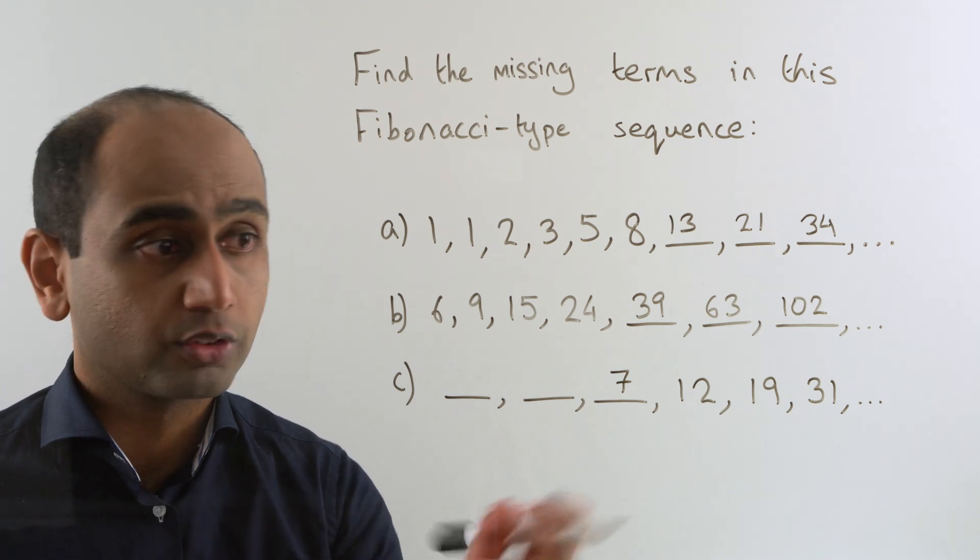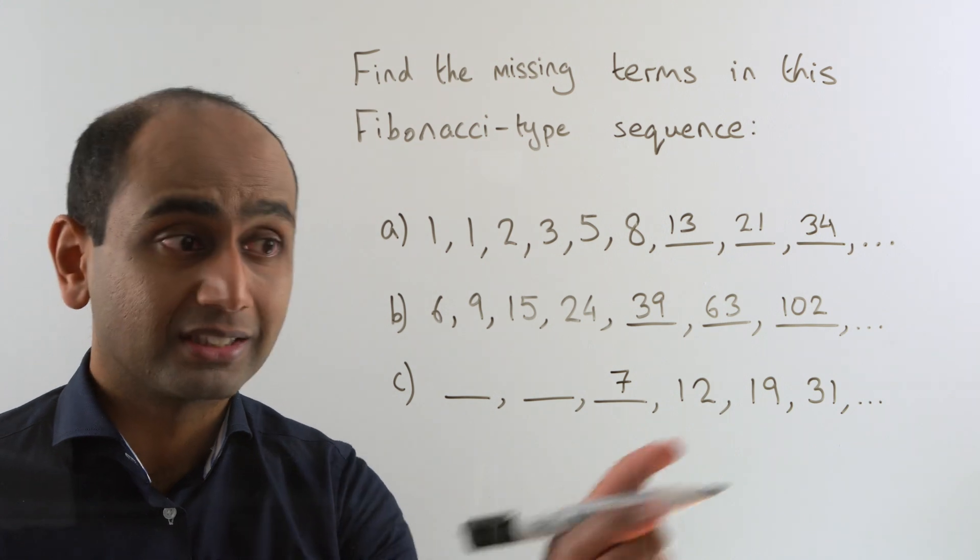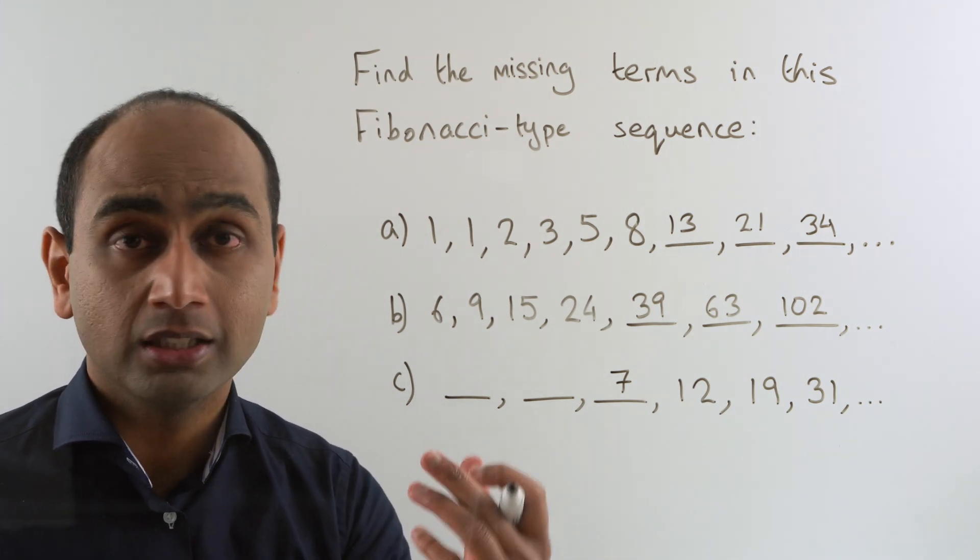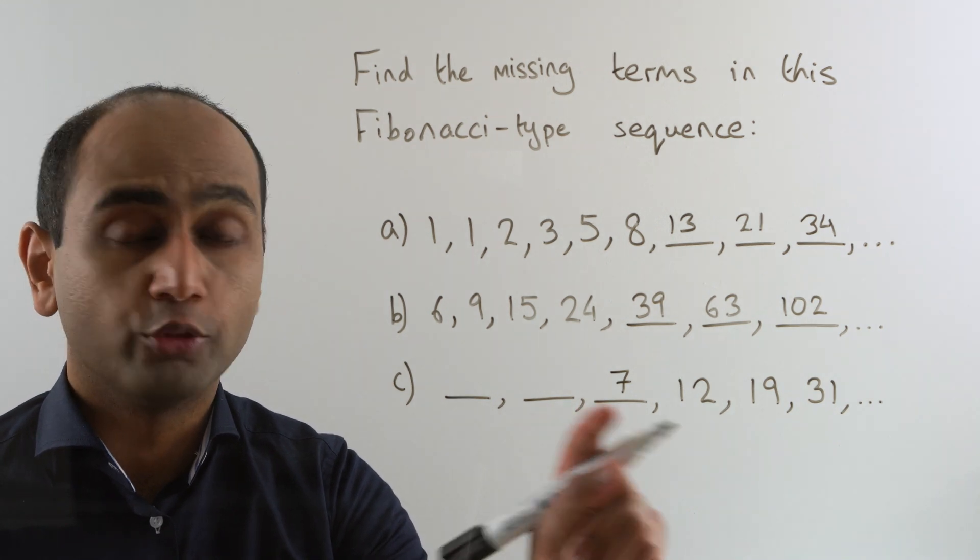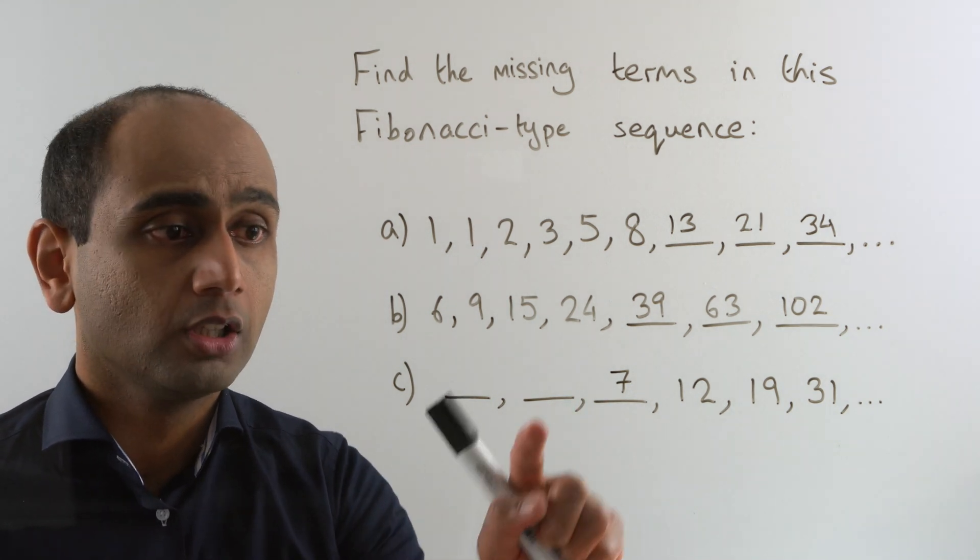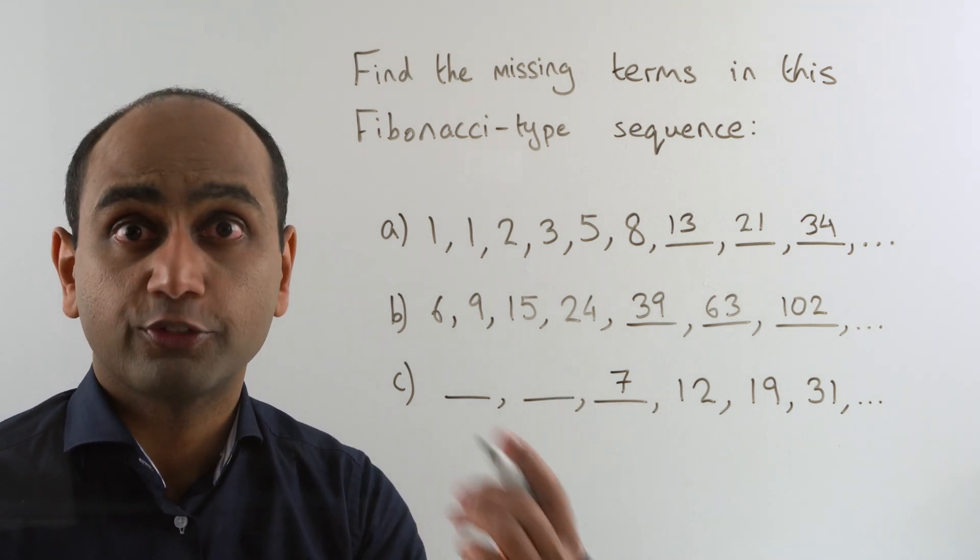Now let's think about the 12. What number has to go here? Well remember to get that number there it has to be the sum of the previous two terms. So what number plus 7 gives us 12? Well the answer is 5.